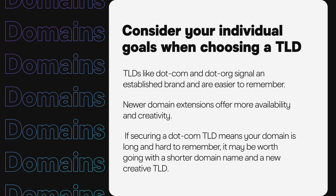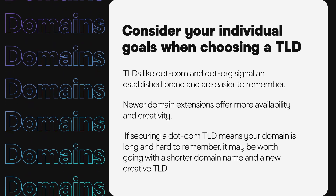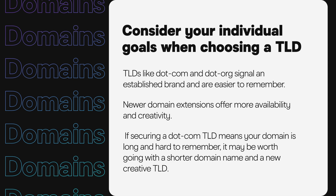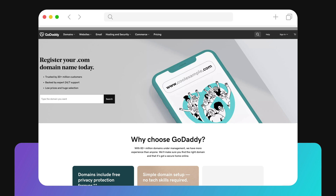But if securing a .com TLD means your domain is long and hard to remember, it may be worth going with a shorter domain name and a new creative TLD. For a complete list of TLDs, view the description in this lesson — not every TLD listed may be available to you, and some might not be available in your country. You can easily search using GoDaddy's domain search once you have an idea of your secondary domain, and GoDaddy will also offer recommendations for additional available TLDs when you search. Now let's move on to the next lesson on strategies for finding the perfect SLD or secondary level domain.